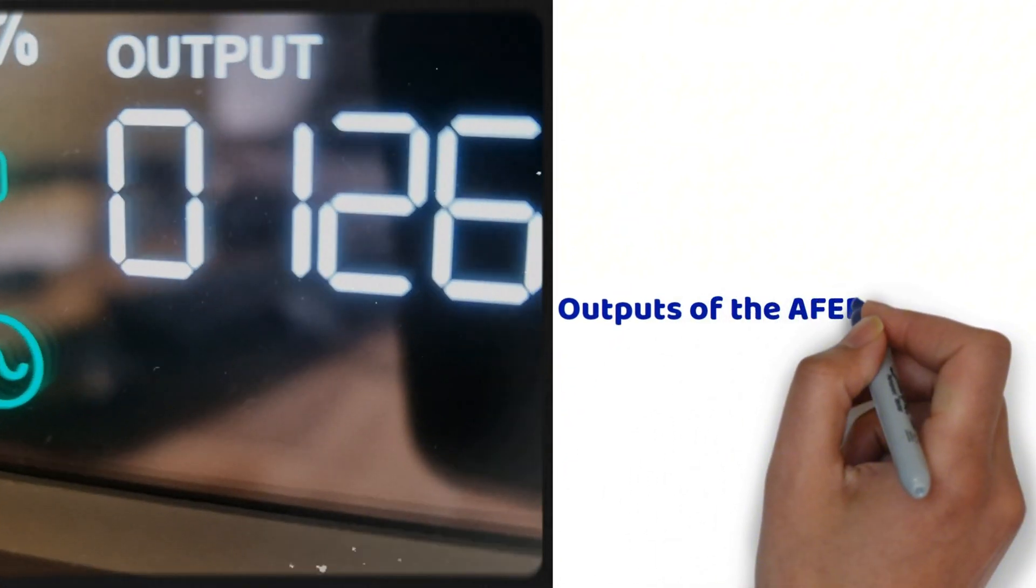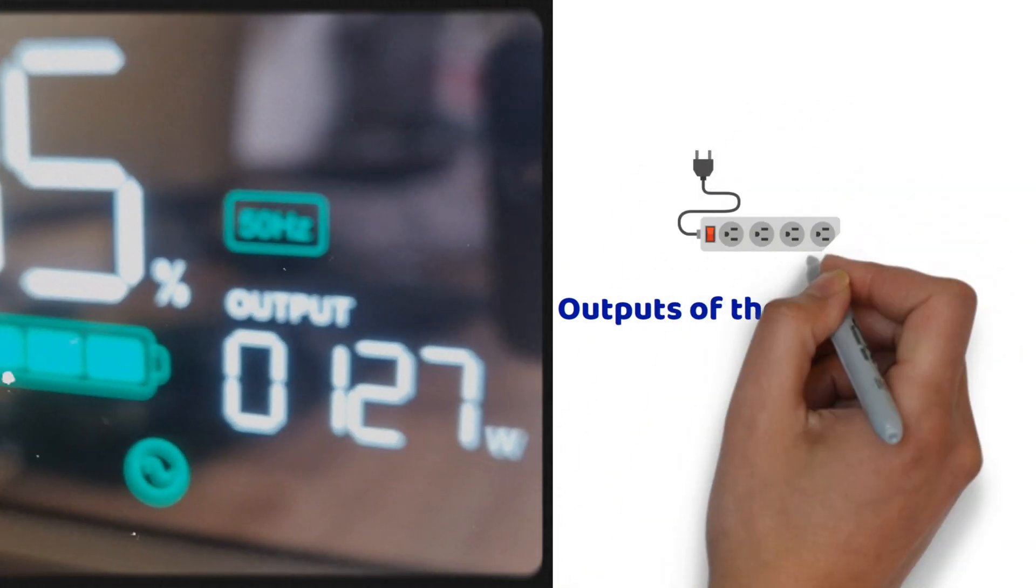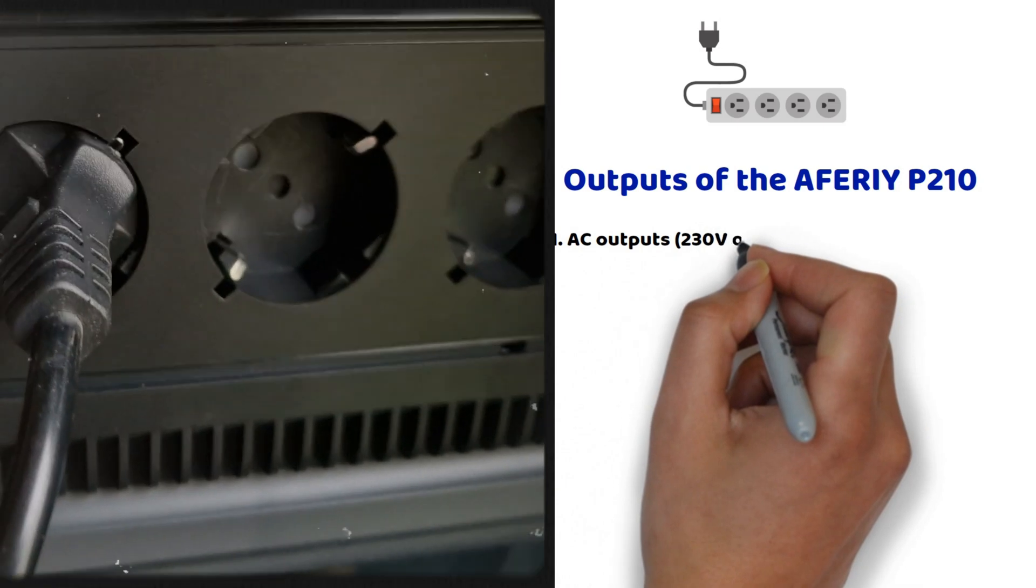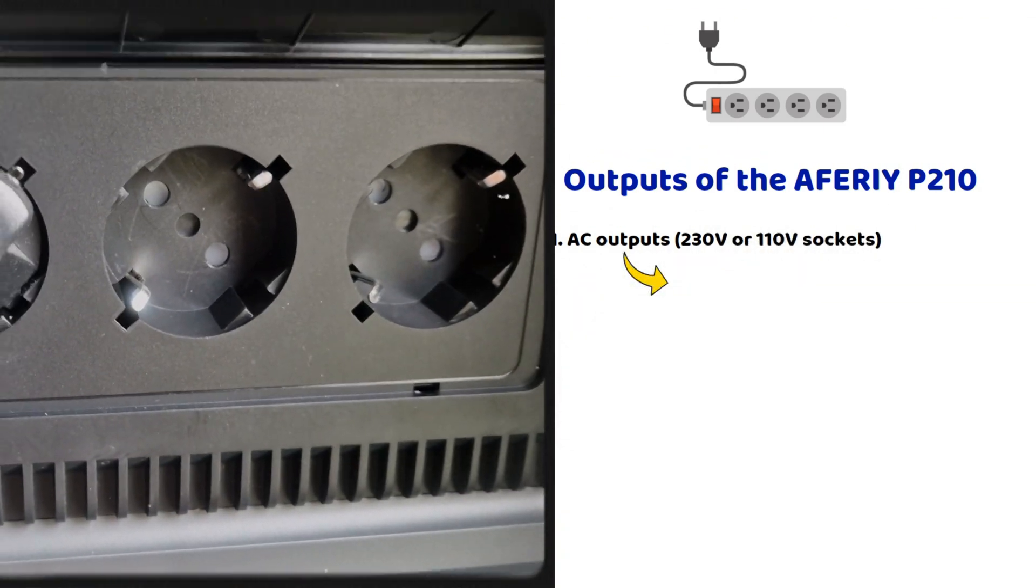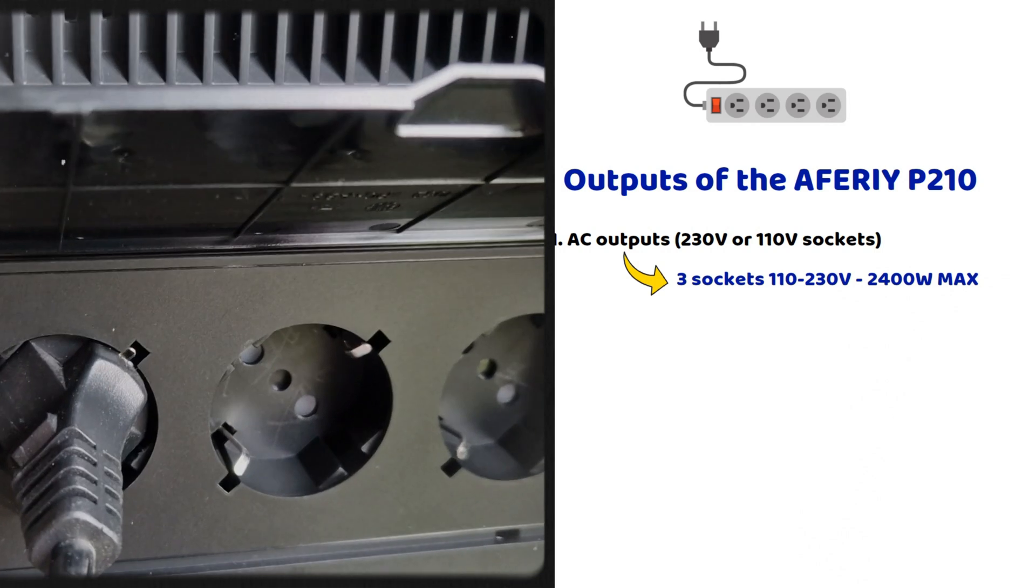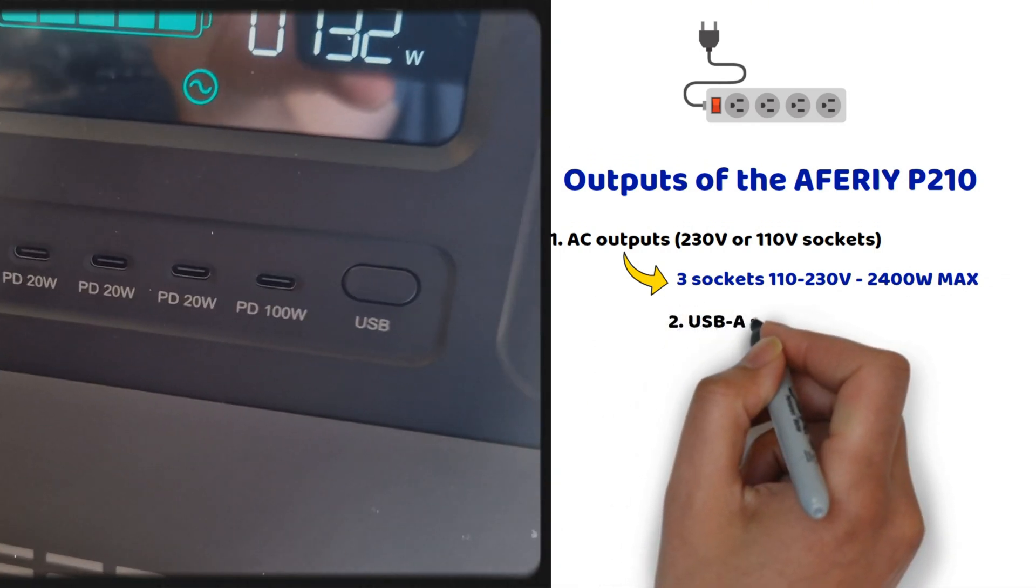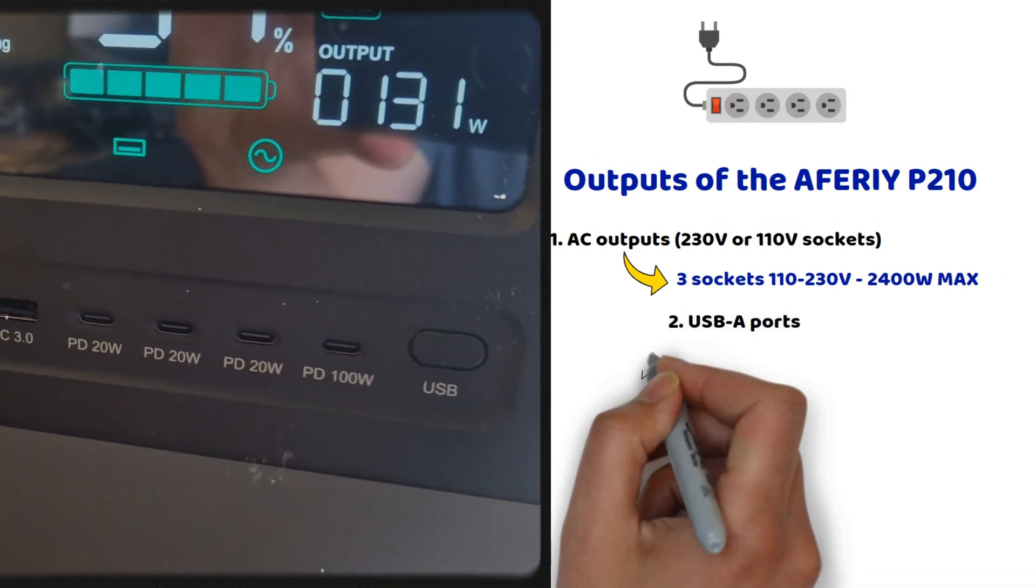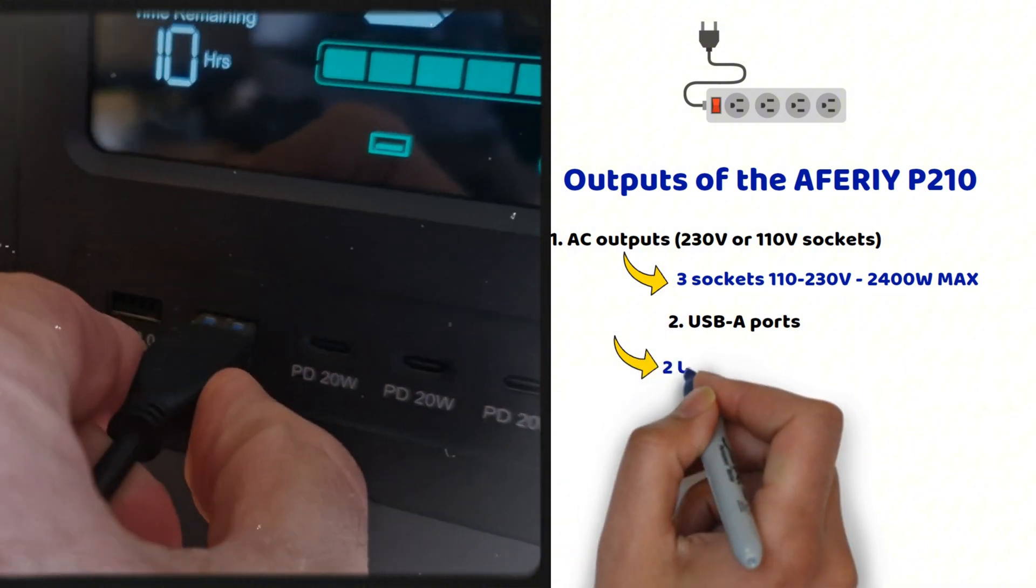As we'll see, the Aferiy P-210 power station is a true portable multi-outlet device. It has a total of 16 outputs to power all kinds of electrical devices. As mentioned, it already features three 230-volt or 110-volt outlets, delivering alternating current with pure sine wave output. These outlets provide a maximum power of 2,400 watts.